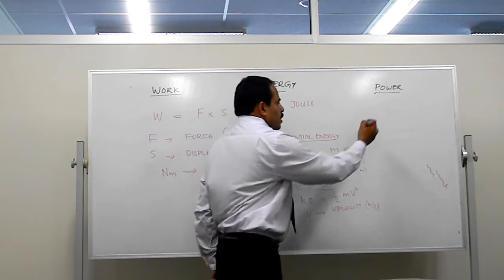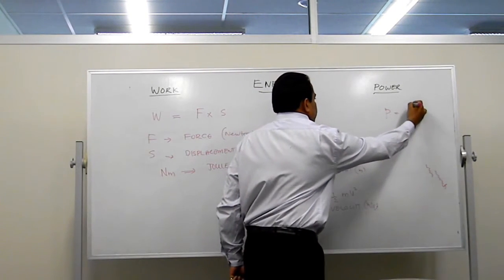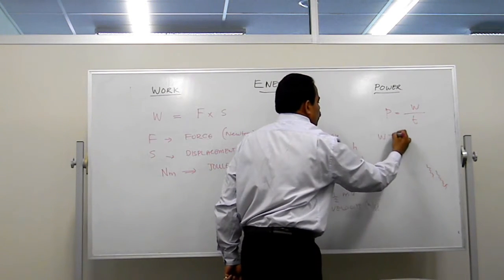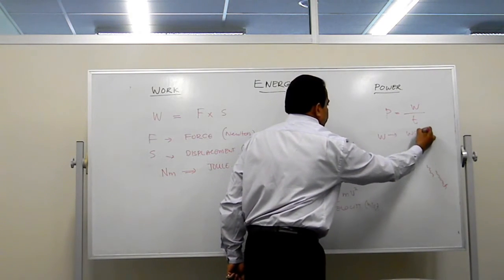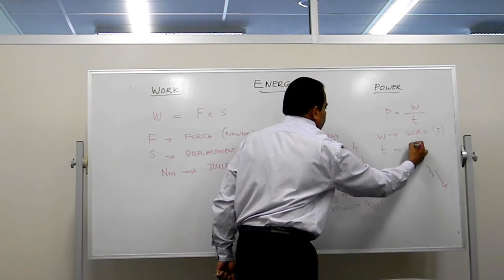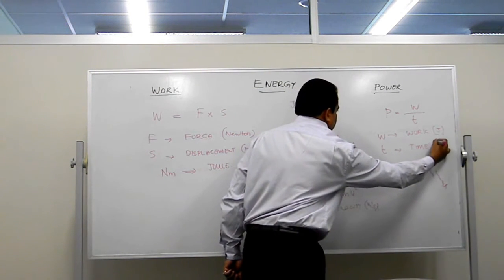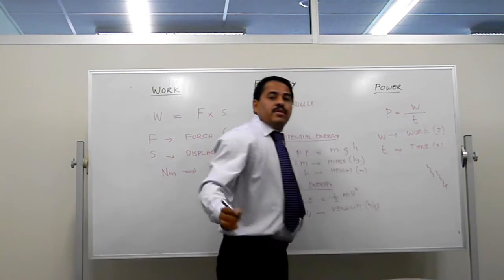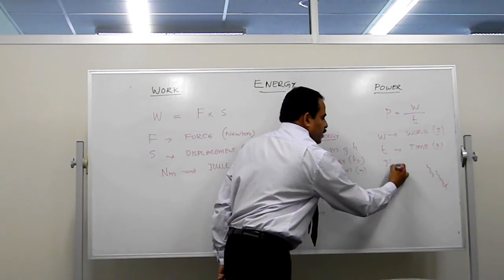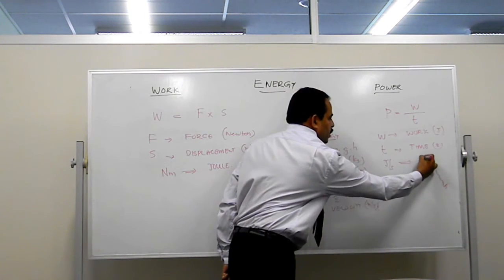So mathematically we can say power is w over t, where w is work in joule and t is the time in seconds. So, the unit of power is joule per second, which is called watt.